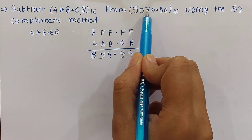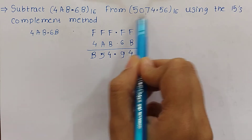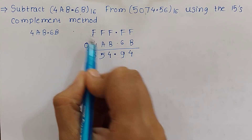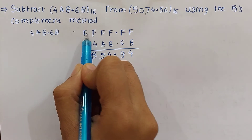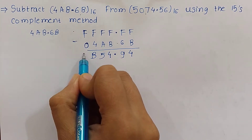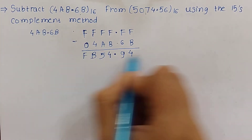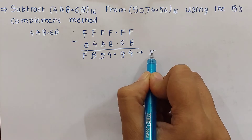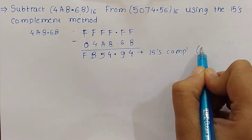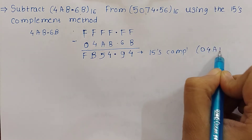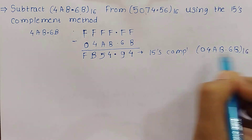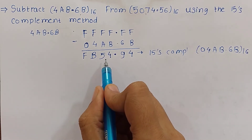The number being subtracted is a 6-digit number, so we make the complement also a 6-digit number by appending an extra 0 and an extra F. F minus 0 is F. So the 15's complement of 4AB.6B is 0B54.94 — written out as 0, 4, A, B, 0.6, B giving complement digits F, B, 5, 4, 9, 4.